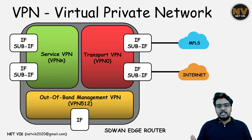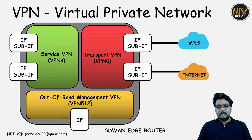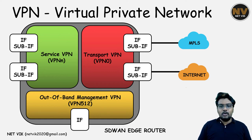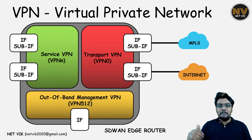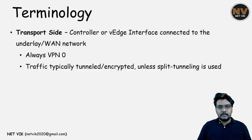Out-of-band management VPN, or the OOB VPN in short, is nothing but external connectivity to a box — out-of-band management connectivity. It does not really have any other functionalities. The number dedicated to this VPN is VPN-512.